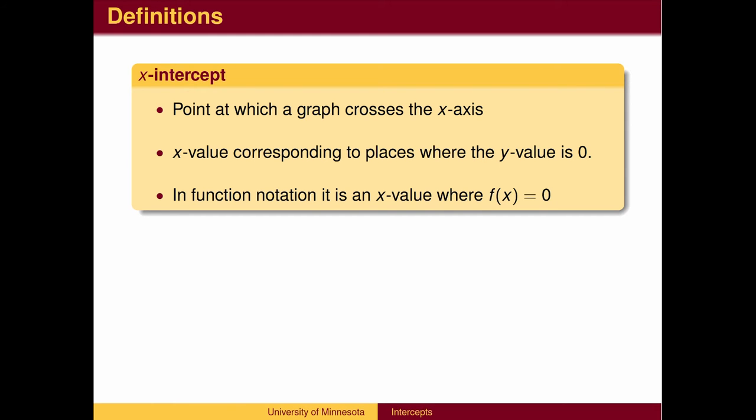Formally, an x-intercept is a point at which the graph crosses the x-axis. It is the x-value corresponding to places where the y-value is zero. In function notation, x-intercepts are x-values where f(x) equals zero.